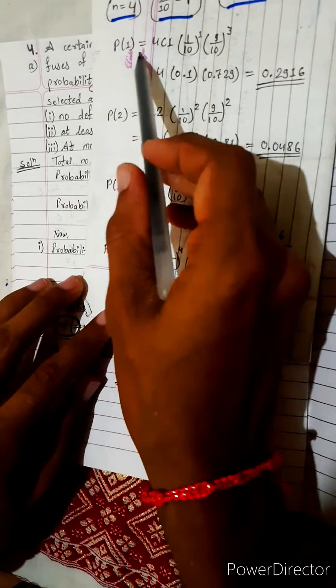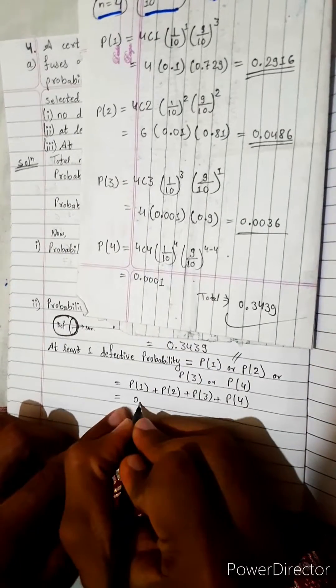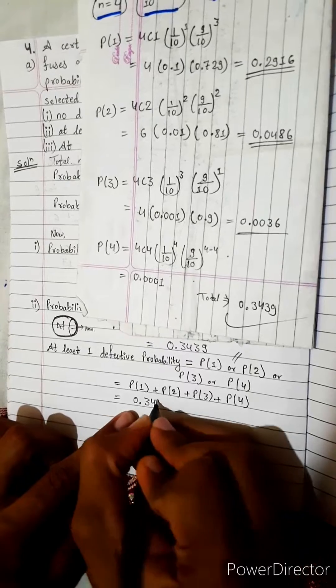Add this all: P1, P2, P3, P4. By adding also, you will get same result, 0.3439.